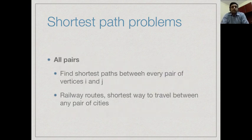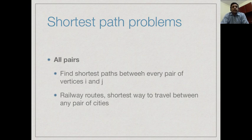Another problem is computing the shortest distance between any pair of vertices. This is natural for airline or train routing networks — whenever you want to travel from city A to city B, you compute the shortest path between them. Services like Google Maps compute the shortest path from a source to a destination, giving travel time for walking, driving, etc. So we have two problem types: single-source shortest paths to every destination, and all-pairs shortest paths between every pair of vertices.